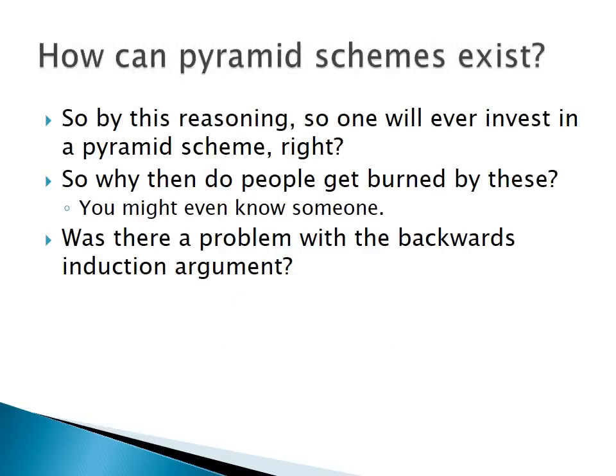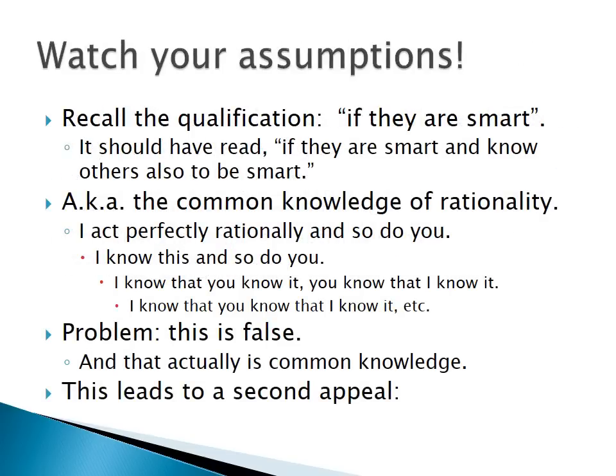But wait — if that argument holds, how can pyramid schemes even exist? The problem is built into the qualification 'if they're smart.' More technically, it requires the common knowledge of rationality — the assumption that I act rationally, and so do you, and that I know this, and you know that I know it, and so on. The problem is this is false. It's actually common knowledge that people often act irrationally, and that leads to the second appeal of pyramid schemes.